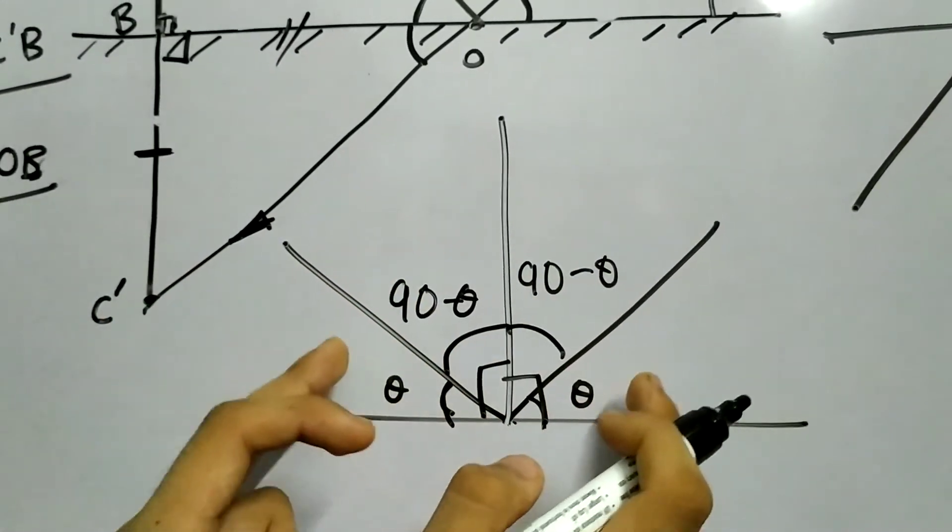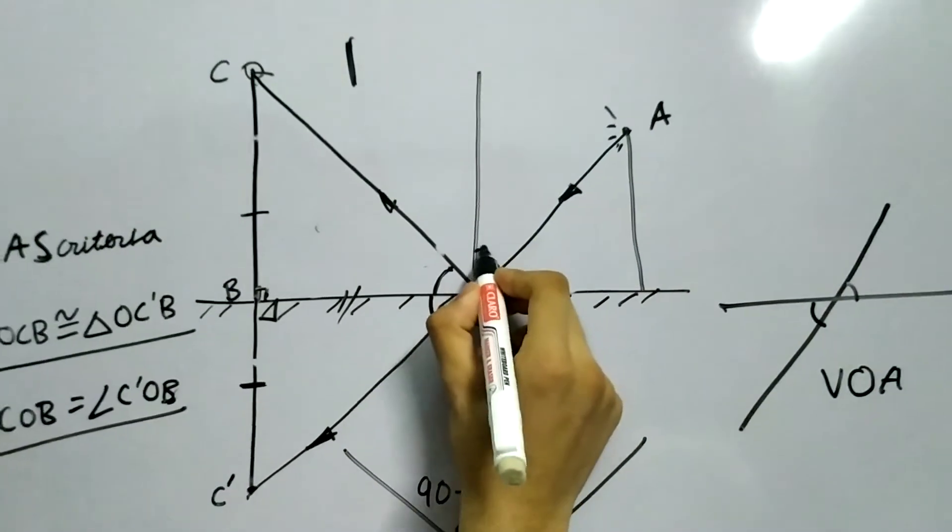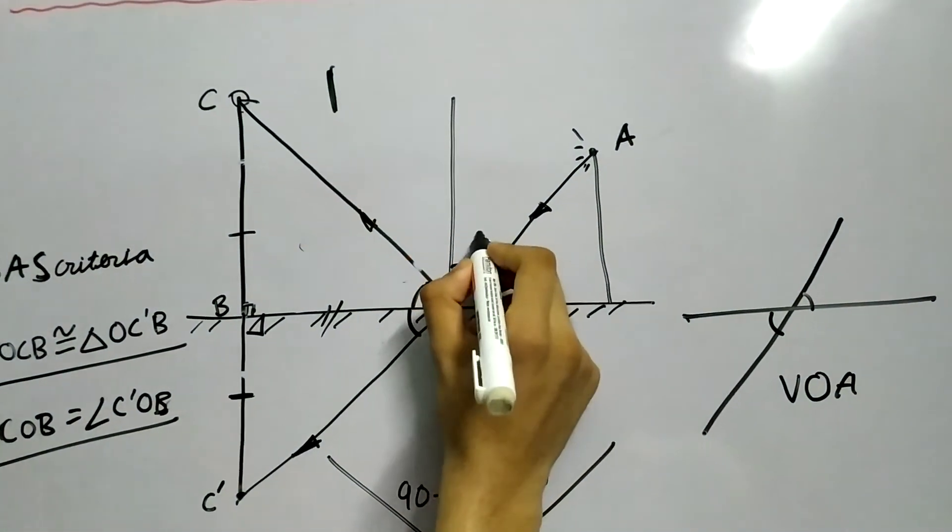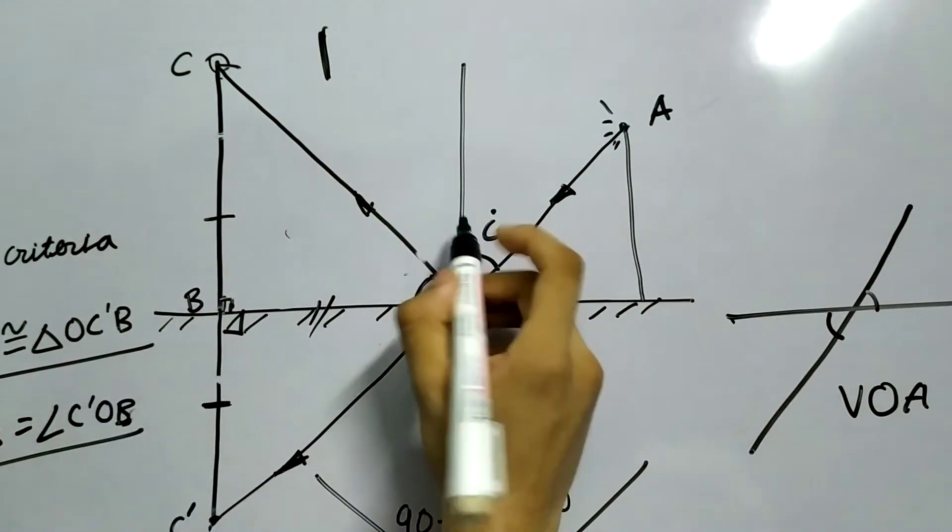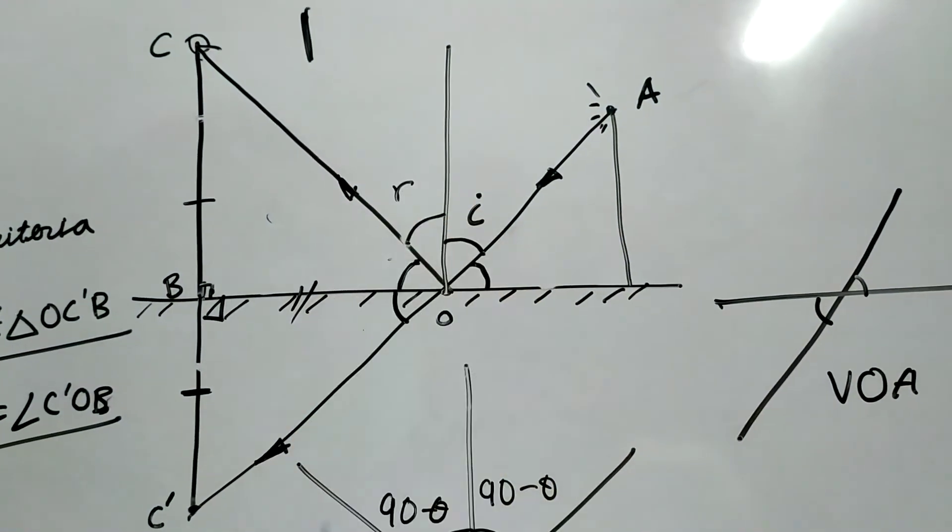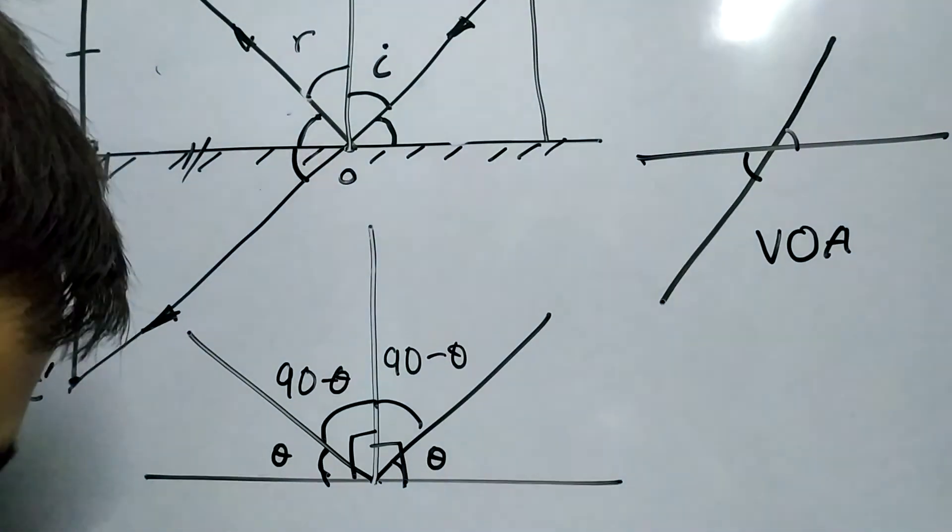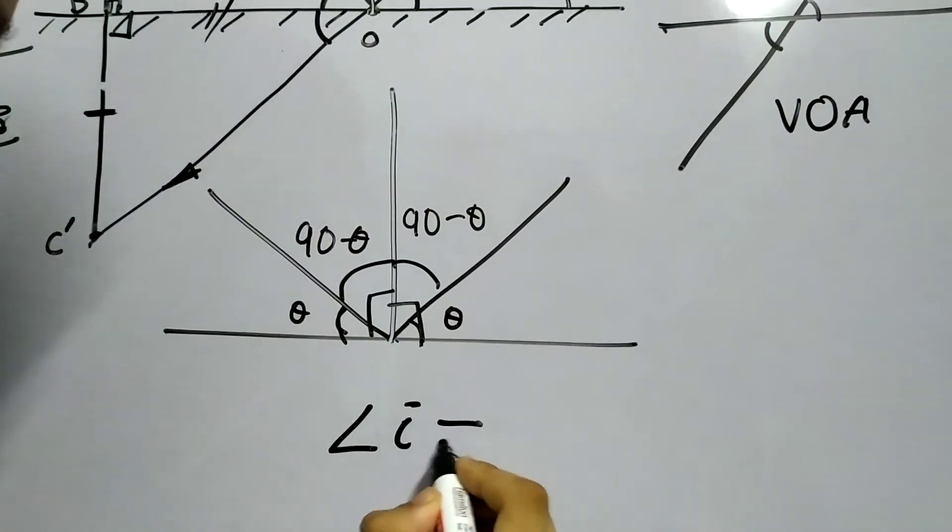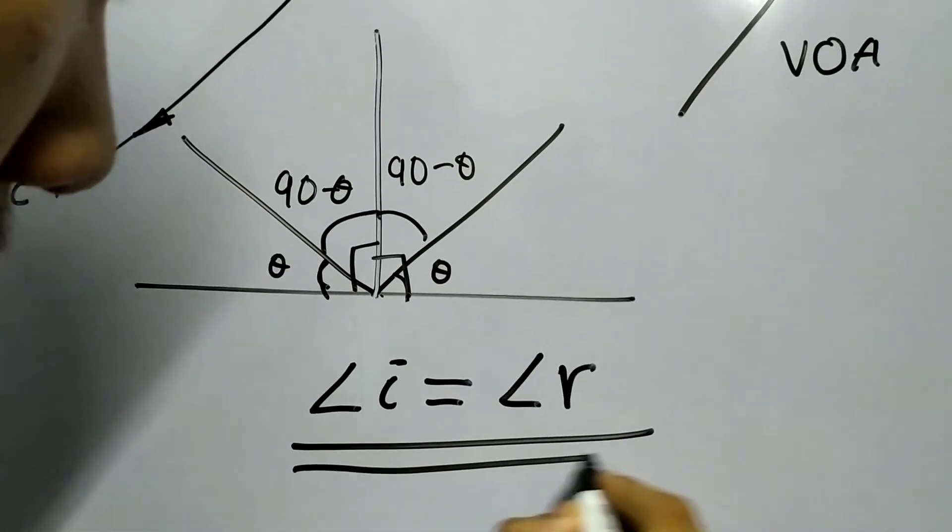this angle will be 90 minus theta. This angle will also be 90 minus theta. Now, these two angles are equal. Now, these two angles are equal. And so, if you draw the normal in this final diagram, you can call this angle as I, angle of incidence, because this is the incident ray. And this angle is R. We have just shown that angle of incidence, angle I is equal to angle R.